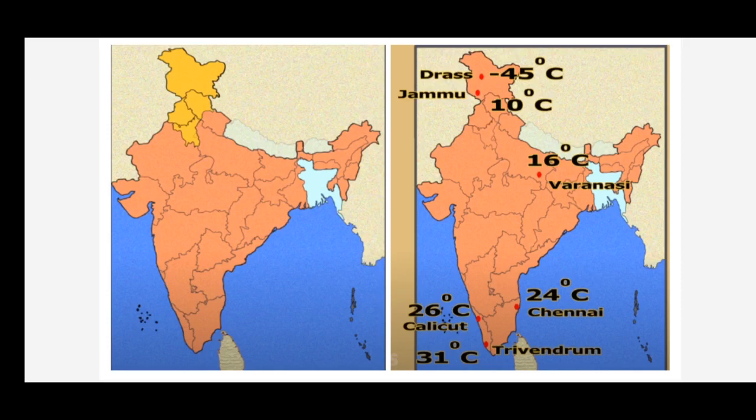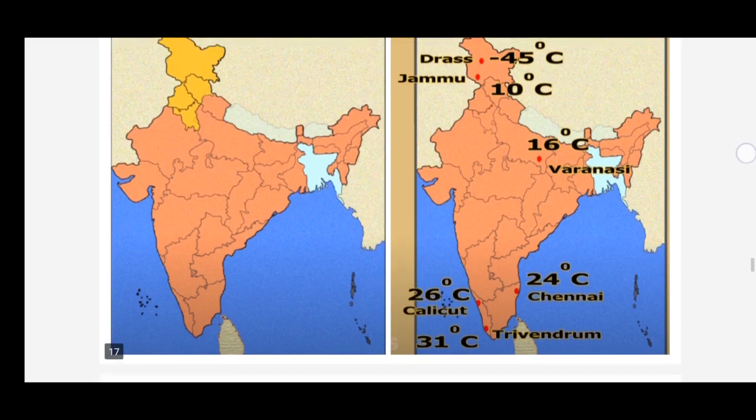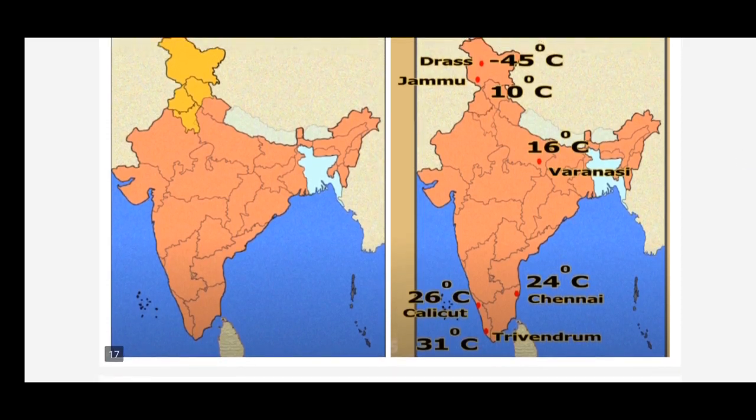Moving northward, at Varanasi the temperature is 16 degrees Celsius, and at Jammu it is 10 degrees Celsius. So the temperature decreases from south towards the north. The Dras Valley in Kashmir, near Kargil, records a maximum temperature of minus 45 degrees Celsius, making it the coldest place in India, due to excessive cold in north India.